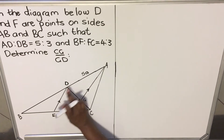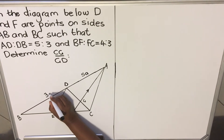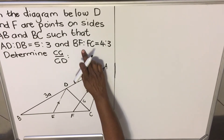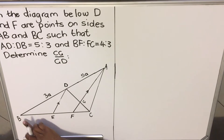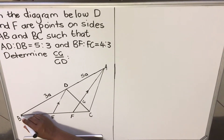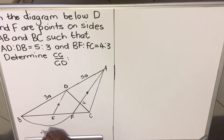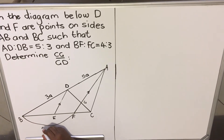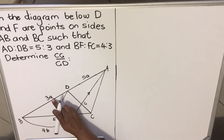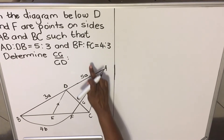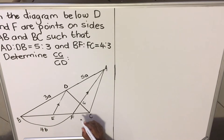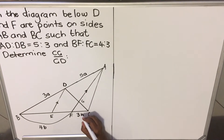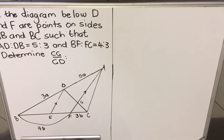DB is going to be called 3A. Then we have BF — BF is the entire line — so BF is going to be called 4B, because it's a different ratio and we use a different alphabet. And then FC is going to be 3B, because it's the same ratio as BF, that's why we use the same alphabet. You can use any alphabet or any variable that you choose.